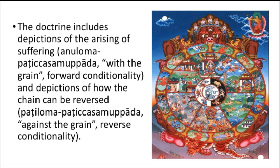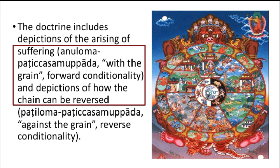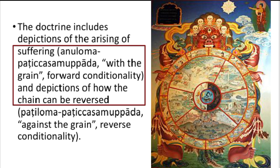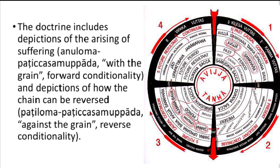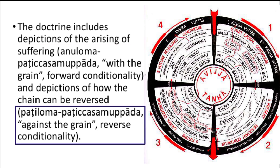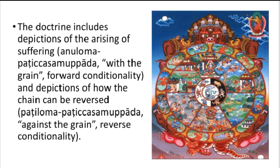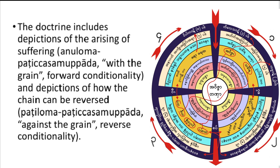The doctrine or theory of causation — Pratītyasamutpāda — describes that suffering arises in life. That is anuloma Pratītyasamutpāda, which means future suffering or after-rebirth suffering, or pratiloma Pratītyasamutpāda, which means suffering of the past. This describes the process of repeated existence and we get to see a chain, combination, and interconnectedness between cause and effect.